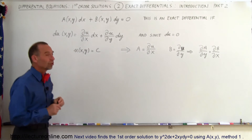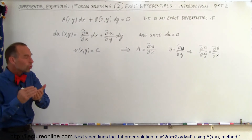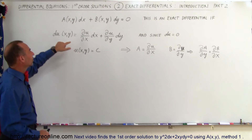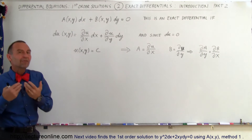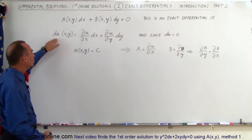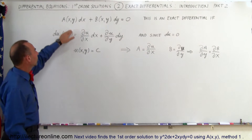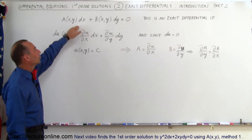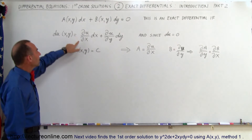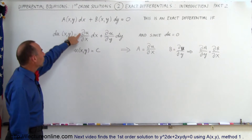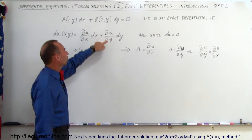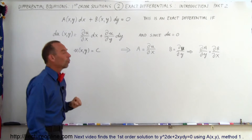It is an exact differential if there's a solution called u, which is also a function of x and y, which can then be differentiated — we can find the differential du — which can be set equal to the initial equation. That means that a represents the partial of u with respect to x, and b represents the partial of u with respect to y.